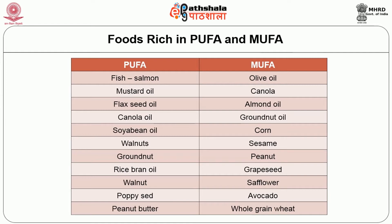Foods rich in polyunsaturated fatty acids include fish particularly salmon, mustard oil, flaxseed oil, canola oil, soybean oil, walnuts, groundnut, rice bran oil, poppy seed and peanut butter. Foods rich in monounsaturated fatty acids include olive oil, canola, almond oil, groundnut oil, corn, sesame, peanut, grapeseed, safflower, avocado and whole grain wheat.